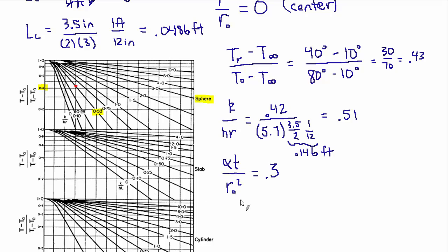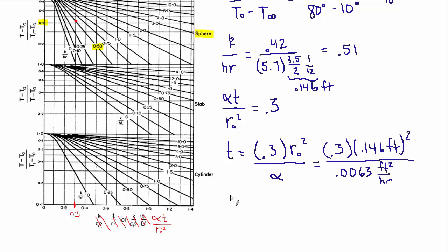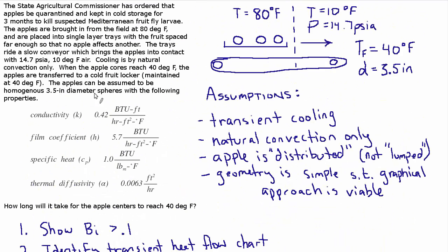Let's solve this to isolate the time T which we care about. .3 times R0 squared over alpha, which is .3 times .146 feet squared. And the thermal diffusivity is .0063 with units of feet squared per hour. If we solve that we get T time equals 1.015 hours, which is about 61 minutes. And that's it. That's how long it takes for the apple to reach 40 degrees at its core.